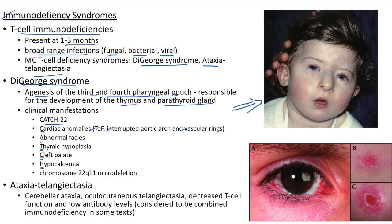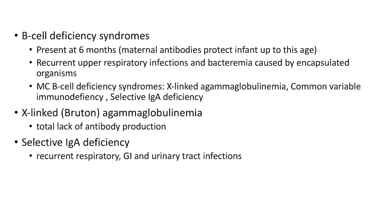Ataxia telangiectasia: cerebellar ataxia and ocular/cutaneous telangiectasia. There is decreased T-cell function and low antibody levels; since there are low antibody levels, ataxia telangiectasia is considered a combined immunodeficiency in some textbooks.